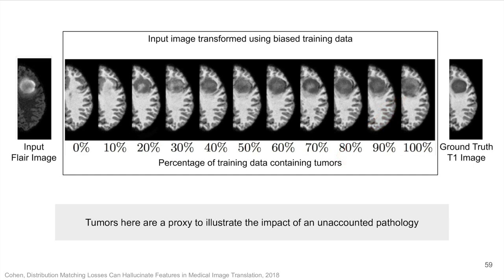Here we consider tumors as a proxy for some unknown pathology that may be present in the data at an unknown proportion.